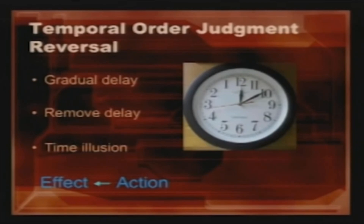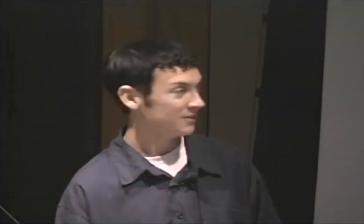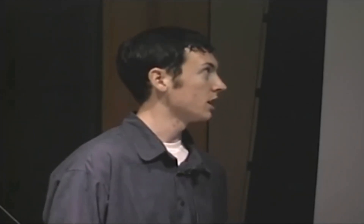To implement this illusion, we insert a series of gradual delays between the actions and the effects. So we'd have a key press and then a 10 millisecond delay and then an image appearing, then a key press and a 20 millisecond delay and an image appears. We keep doing this, incrementing up to around 200 milliseconds. We do these gradual delay incrementations to adapt the person and modify their perception of time. Then after modifying their perception of time, we completely remove the delay, and this causes the time illusion.